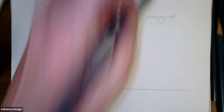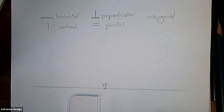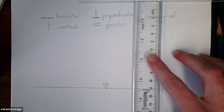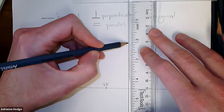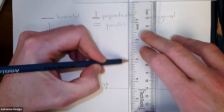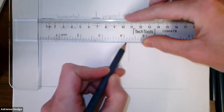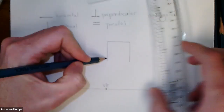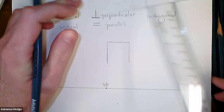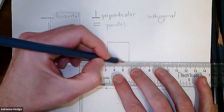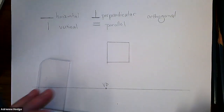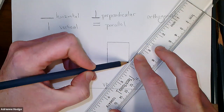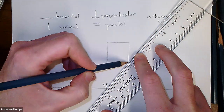First, we're going to draw a box. It doesn't have to be perfect — you can even freehand the front of it. You can use your ruler or straight edge, but it doesn't have to be a perfect square or rectangle, just a box. We just want to get a sense of what happens to the sides and bottom in one-point perspective. I'm drawing a box facing me — mine's a little wonky, just to show you it doesn't have to be perfect.